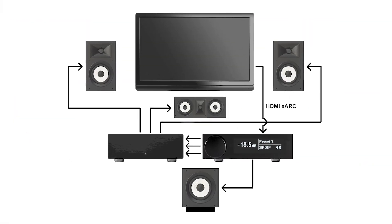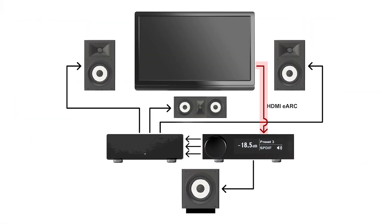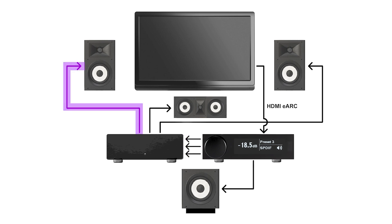The system wiring is completed as follows: eARC from TV or HDMI processor to FlexHT, RCA cable from FlexHT to subwoofer, RCA cables from FlexHT to 3 amplifier channels, and speaker wire connections from the amplifiers to left, right, and center speakers.